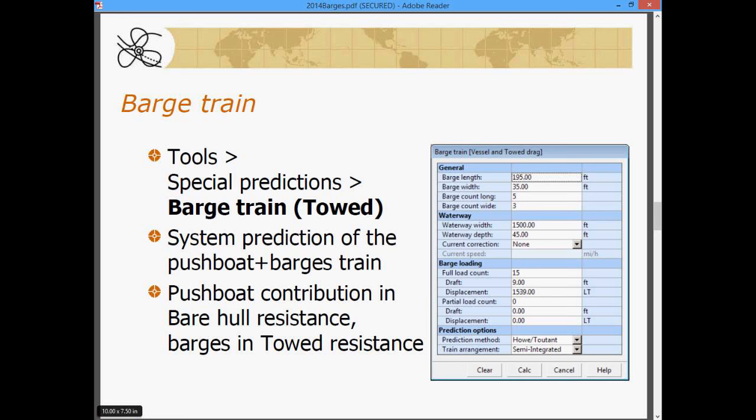Now, we can see the characteristics of the barge length, the individual barge length, individual barge width, a barge count long, five barges in the rectangular grid long, and three barges wide, for example.